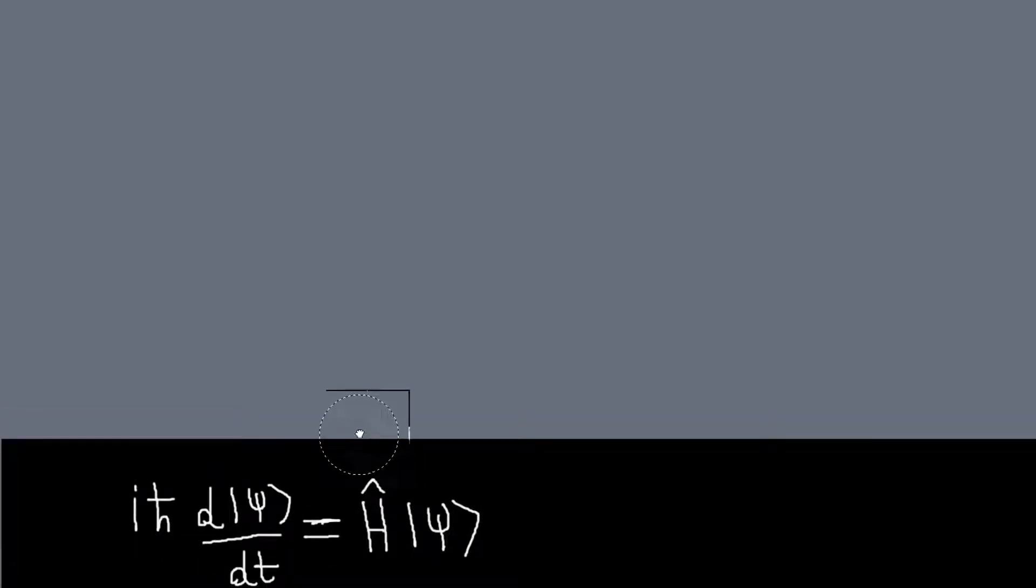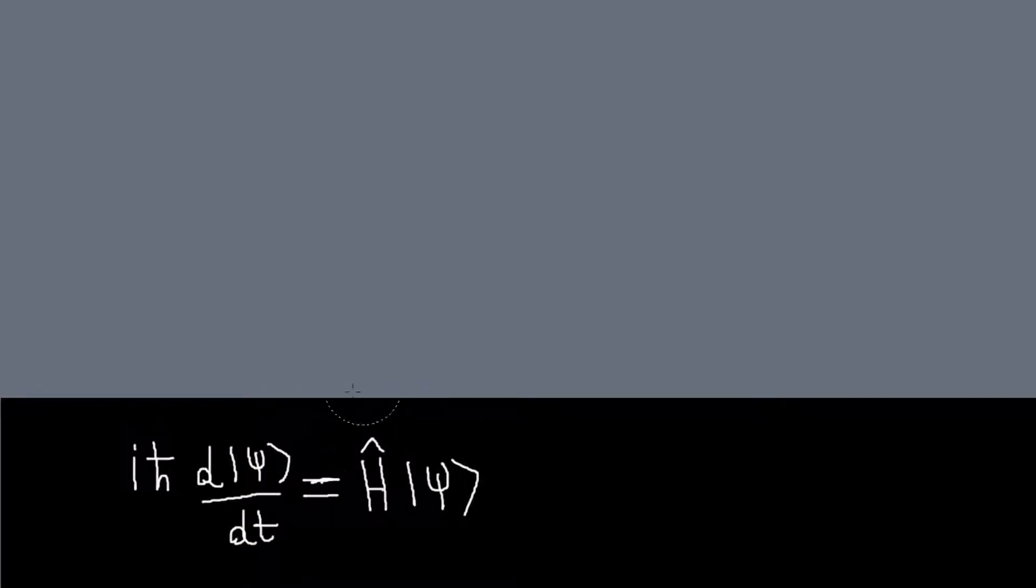So I'm going to derive, and I'm doing air quotes when I say that, derive the time evolution operator by basically solving, again air quotes, solving the Schrodinger equation kind of generally. And the way I'm going to do that is by assuming, or by treating my state ket here as a function of time. And treat it just like any other function of time.